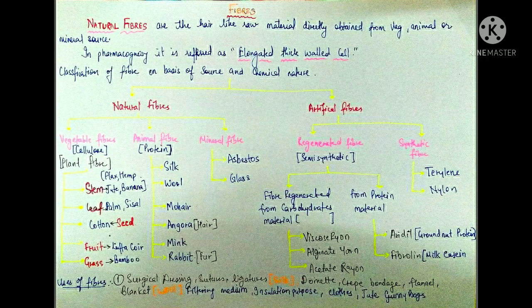Fibers can be classified into two major types: natural fiber and artificial fiber. In natural fiber we have three types: vegetable, animal, and mineral. For artificial fibers we have regenerated fibers and synthetic fibers.